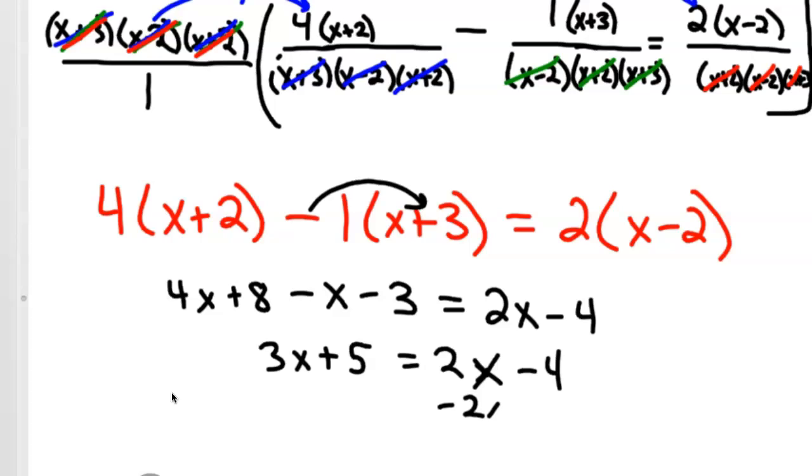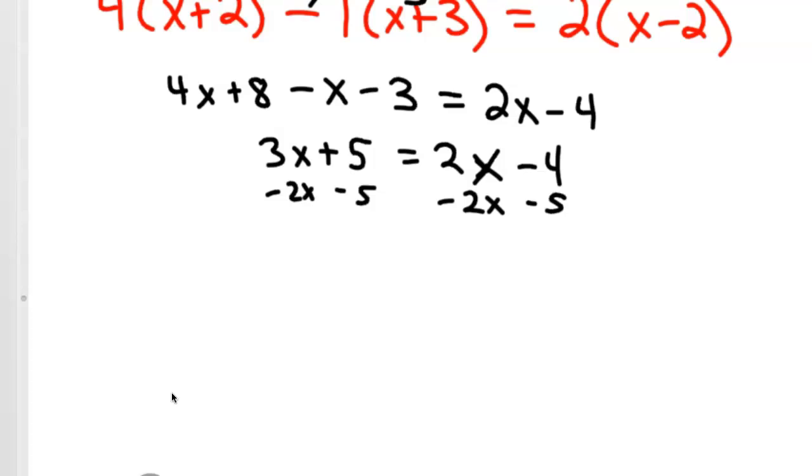And then you subtract your 2x to the left, subtract your 5 right, and we've got it pretty much hammered out. 3x minus 2x is x, negative 4 minus 5 is negative 9, and there's your final answer.